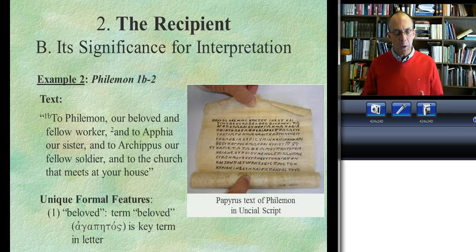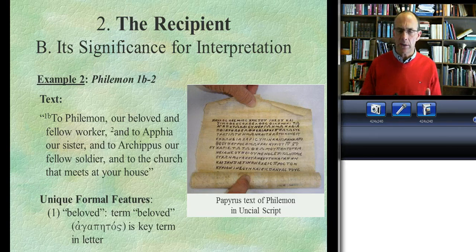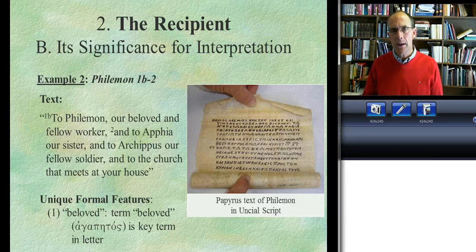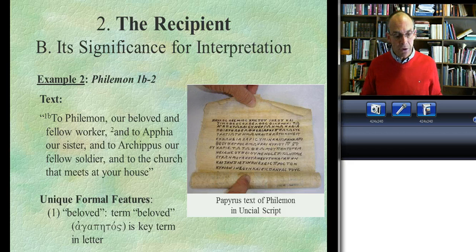Paul does more. Even though the letter is written to Philemon — and in Greek you can distinguish between the singular and plural 'you,' with Paul using the singular throughout with one exception — he deliberately includes other people in the recipient formula. He says not just to Philemon, but also to Apphia, also to Archippus, and then to the church that meets at your house.